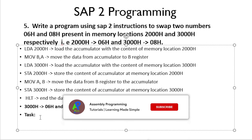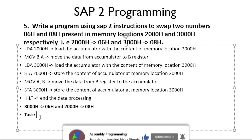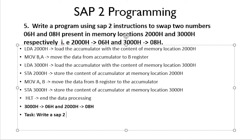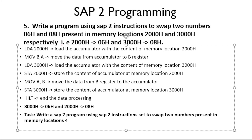Now I will give you a task — post your answers in the comment section below. The more questions you practice, the more you will succeed. Today's task: write a SAP 2 program using the SAP 2 instruction set to swap two numbers present in memory locations 4500H and 4800H. If you have any queries, post them in the comments. If this video helped you, give it a thumbs up, subscribe to our channel, and hit the bell icon to be notified when we upload new videos. Thank you.